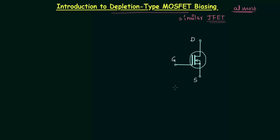In this case we are using N-channel depletion type MOSFET, and throughout our DC analysis we will use N-channel depletion type MOSFET, just like we used N-channel JFET. A depletion type MOSFET we call D-MOSFET for short, and in the same way you can call enhancement type MOSFET E-MOSFET. Before talking about the transfer curve of N-channel D-MOSFET, we will first talk about the operating point.